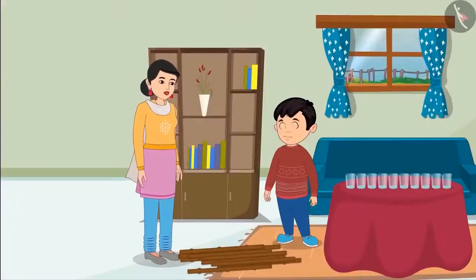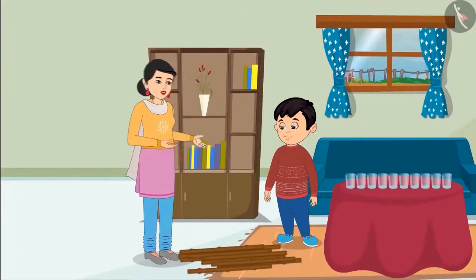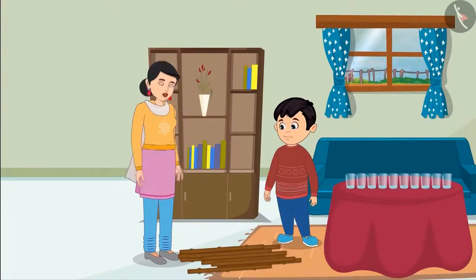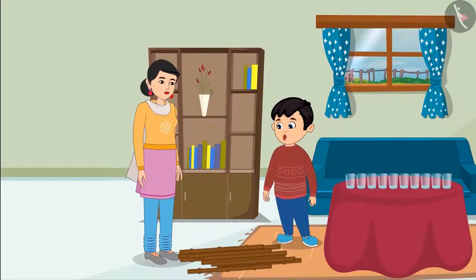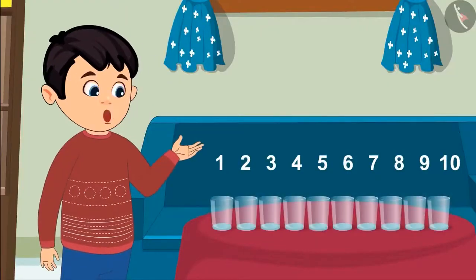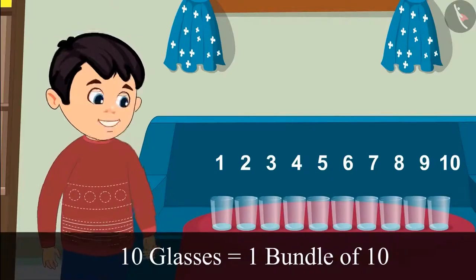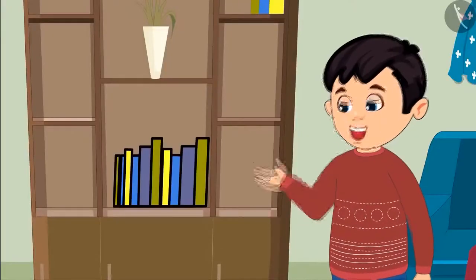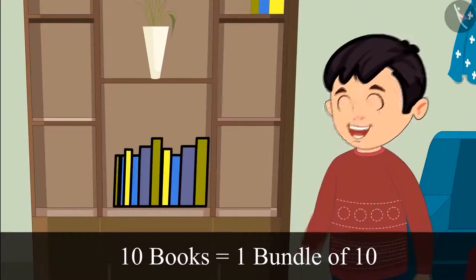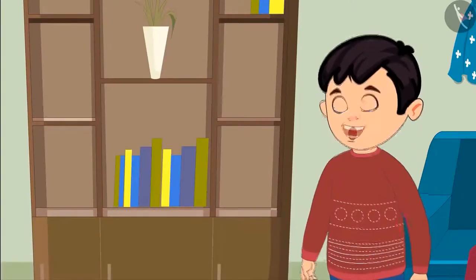This means that if the number of items is 10, then we can say it is a bundle of 10. Can you spot some objects in this room which are in a bundle of 10, Choto? Yes, mummy. These are 10 glasses, so we can call their group a bundle of 10. Similarly, those books are also 10, so they are also making a bundle of 10.